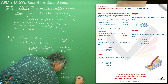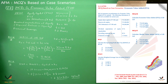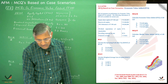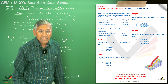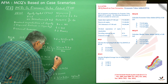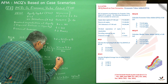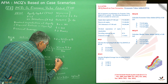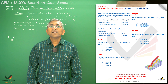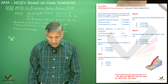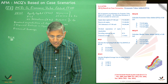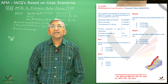For MCQ number two, you can see which option is correct — the answer is option number B. Next we have MCQ number four, in which we have to calculate the market value added of AB Limited.